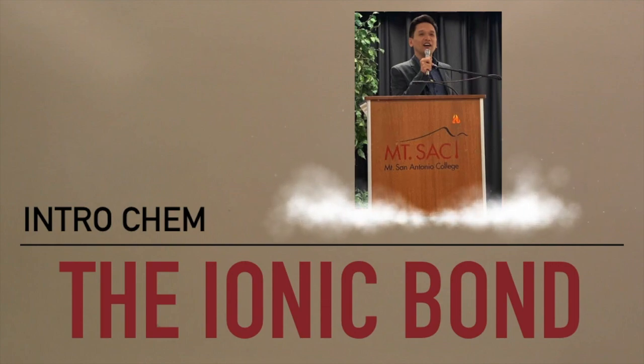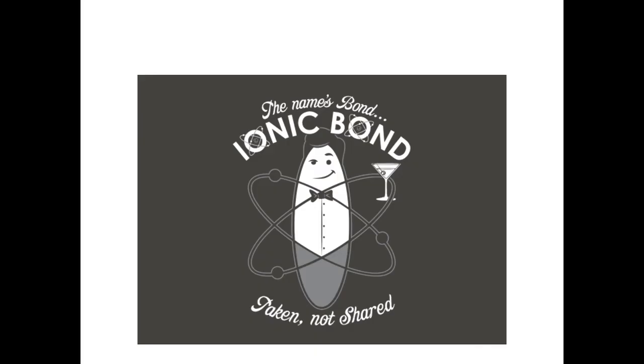In nature almost every element combines with something else to form compounds, and compounds can be made by connecting atoms by two methods. One is called ionic bond and two is called covalent bond. Ionic bonding will give you a compound sometimes called a salt, and covalent bonding will give you compounds known as a molecule.